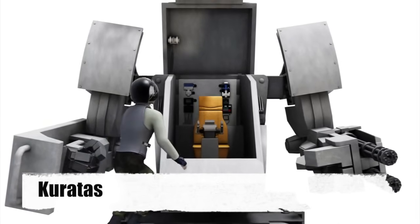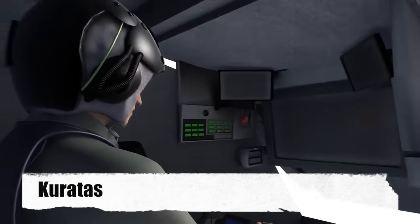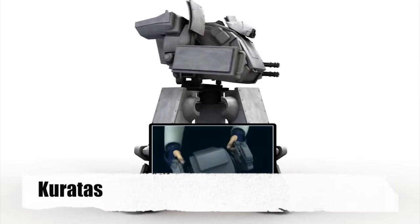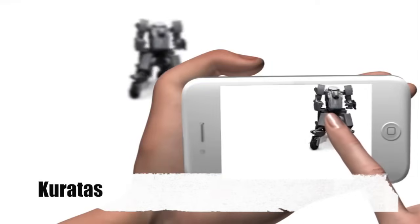It can be crewed by one person. That operator would sit in the body of the robot in a seat with the control device in front of them. The Kuratas can also be controlled externally by remote control.